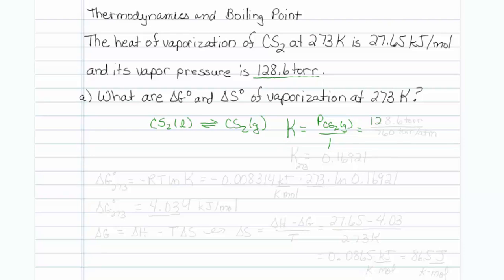That would be equal to 128.6 Torr divided by 760 Torr per atmosphere to get it in the proper units. And that, when we put it into our calculator, turns out to be 0.16921.